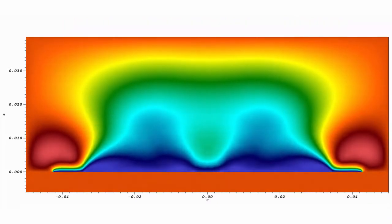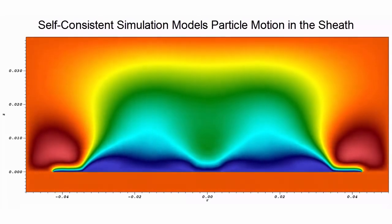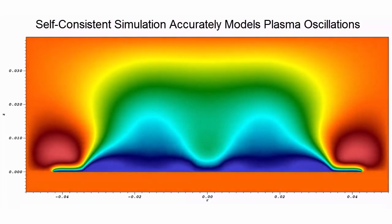Self-consistency is desirable in order to accurately model particle motion in the sheath. Self-consistency accurately models plasma oscillations.